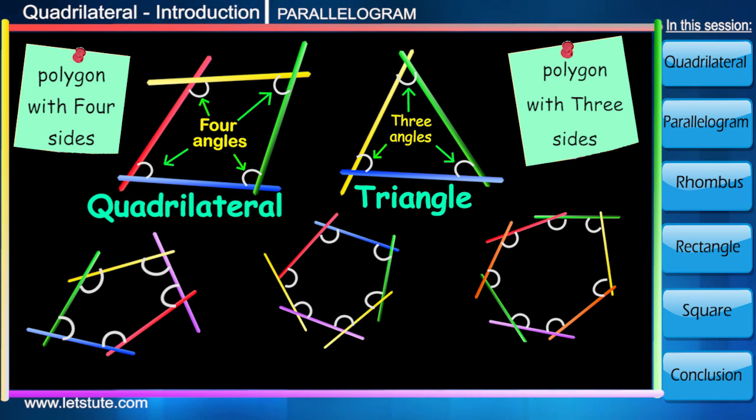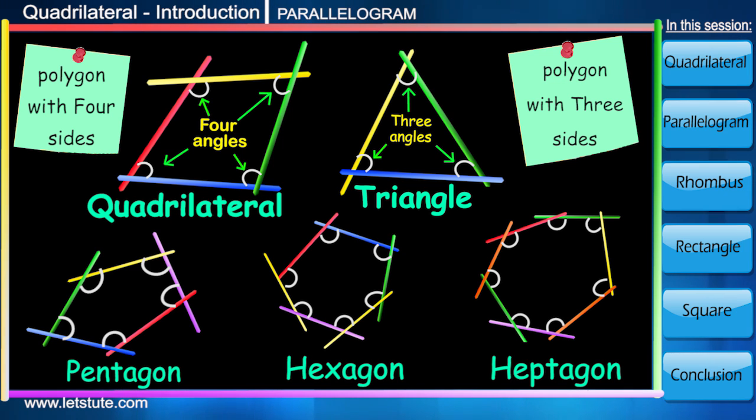So a triangle is a polygon with three sides, and a polygon with four sides is called a quadrilateral. With five, it's a pentagon; with six, a hexagon, and so on.